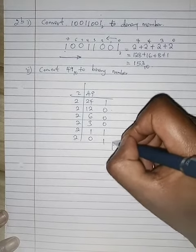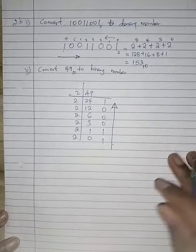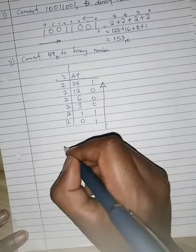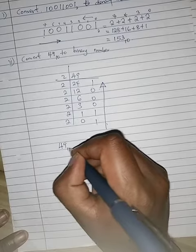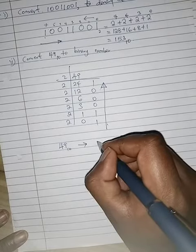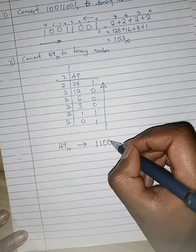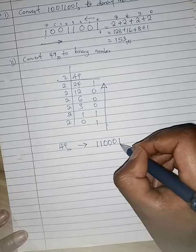So you arrange this going up like that. So it will be 49 to base 10 is 1, 1. And of course you arrange like that, 0, 0, 0, 0, 1.